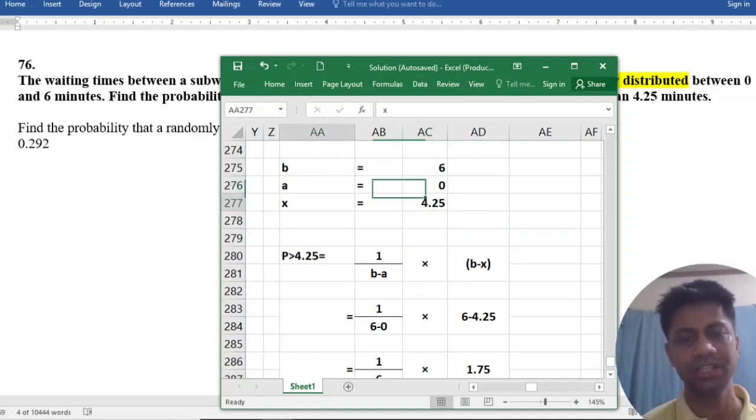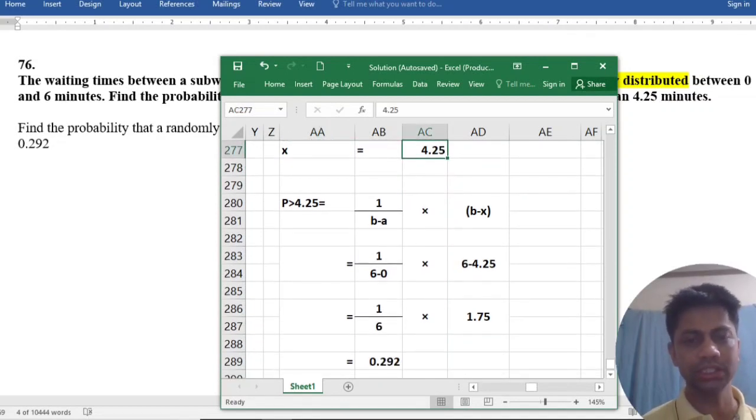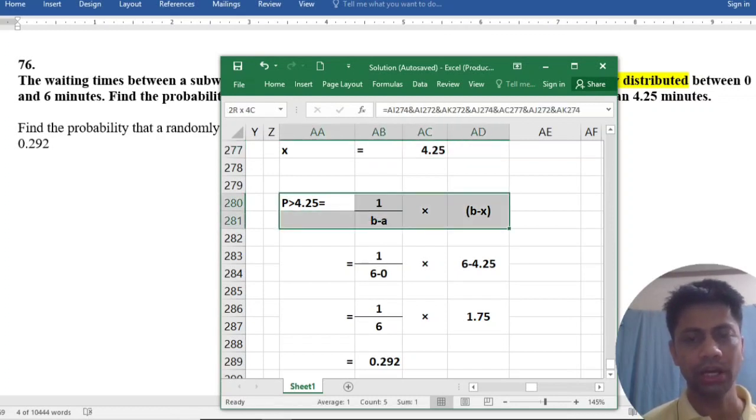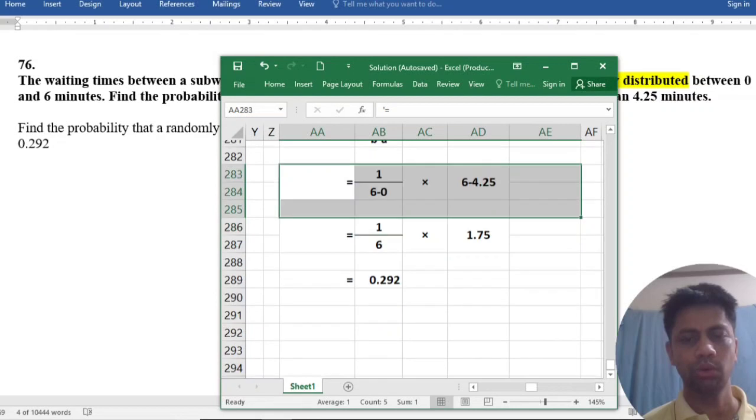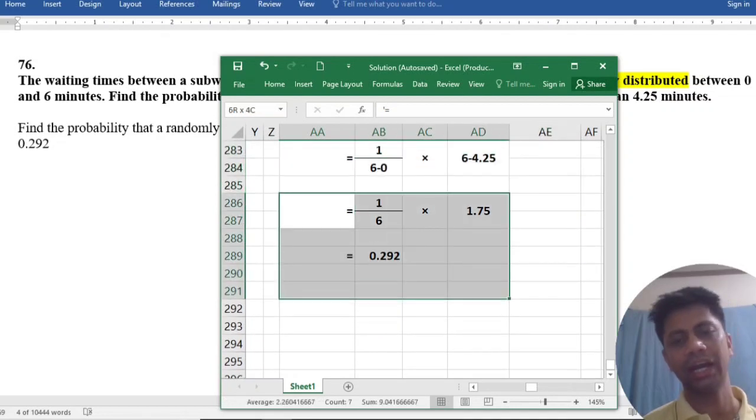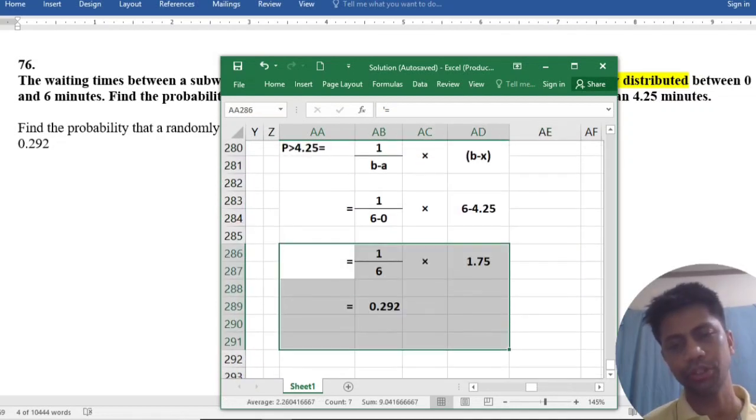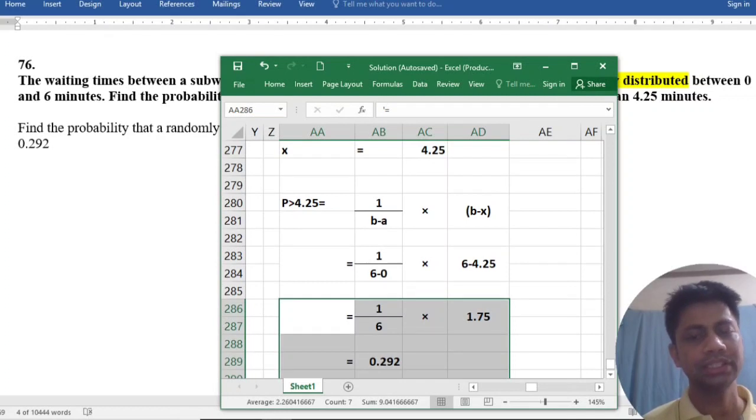And A is equal to 0 minutes, and X is equal to 4.25. By using this formula, 6 minus 0, finally I got the result is 0.292. This is our desired result.